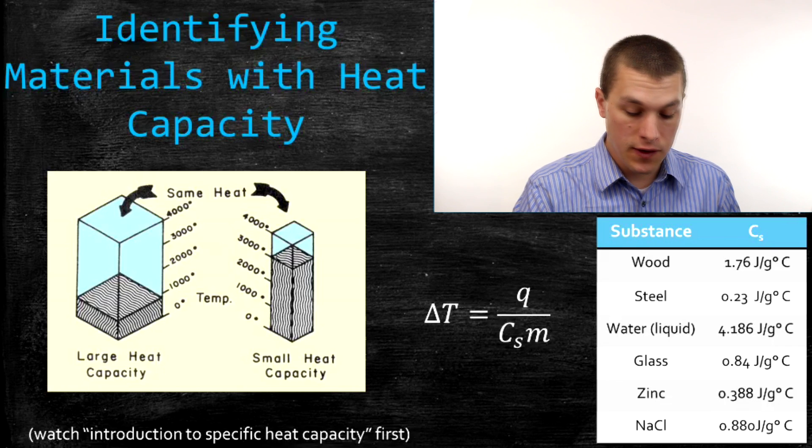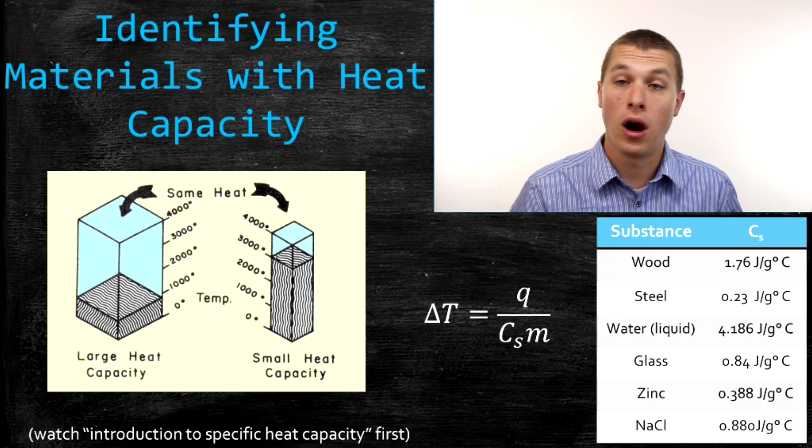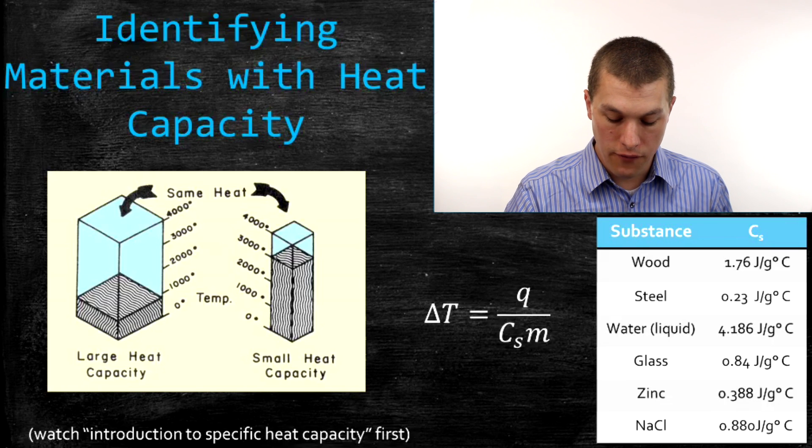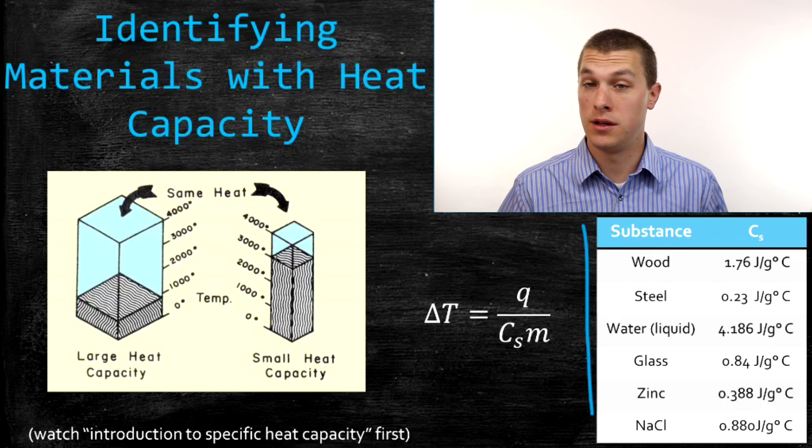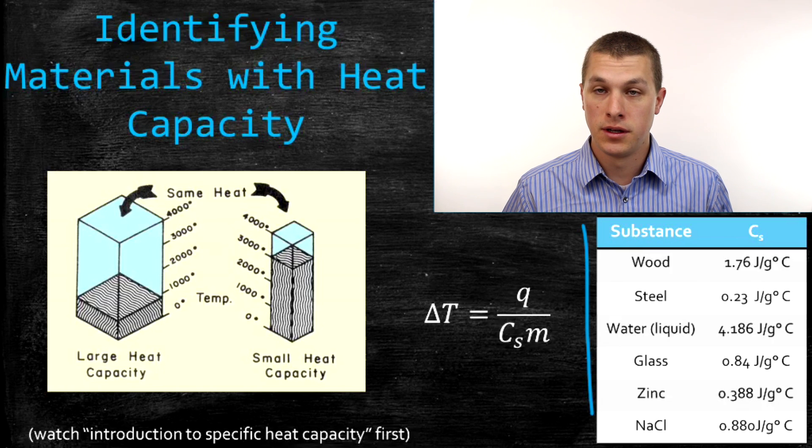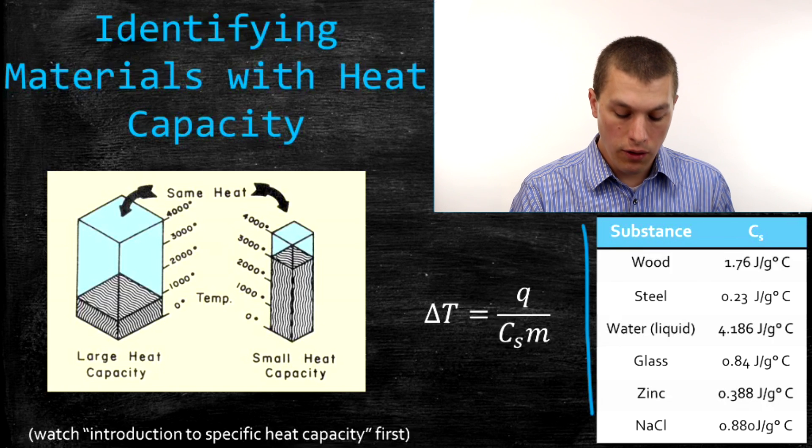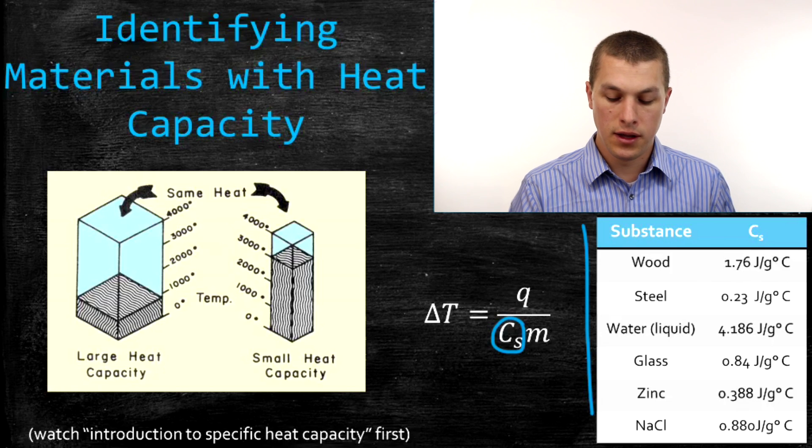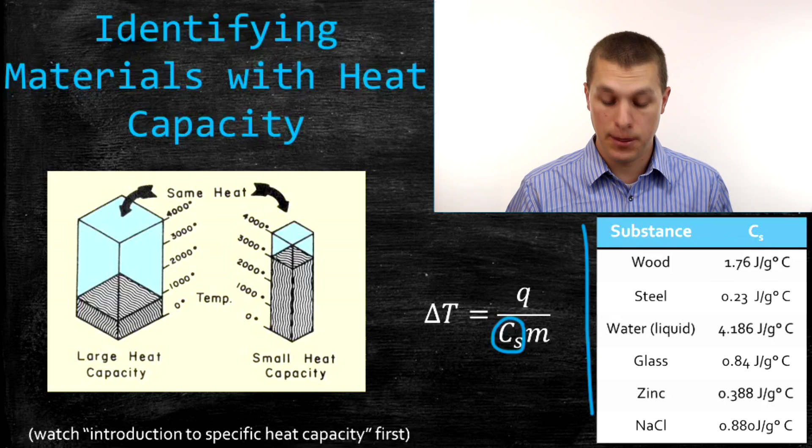The basic idea here is since specific heat capacity tells us how hard it is to heat up a material, and we can actually construct a table of all the different materials and how hard it is to heat them, we can actually use our specific heat capacity equation to figure out what a material is. How do we do that? We look at this equation and Cs right here is tabulated in this table.